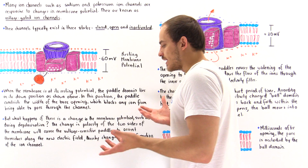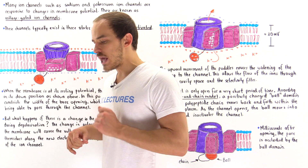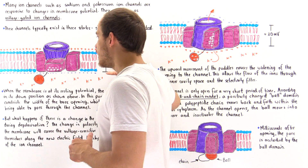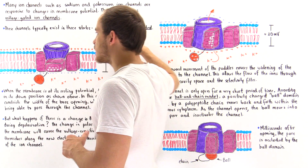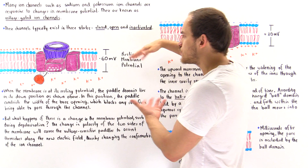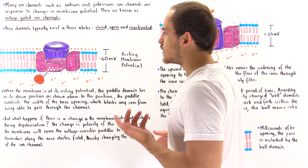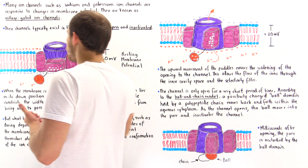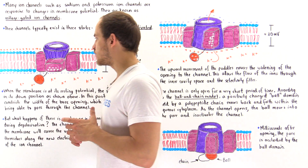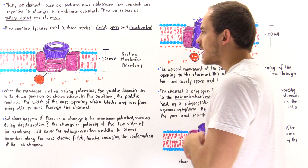Let's suppose we have a membrane with a resting membrane potential of negative 60 millivolts. That means the inside of the membrane is negatively charged and the outside is positively charged, as shown in this diagram. We know from physics that this separation of charge creates electric field lines running from the positive end to the negative end. There is also a high concentration of potassium on the inside and a low concentration on the outside.